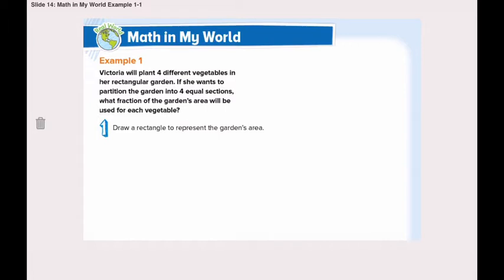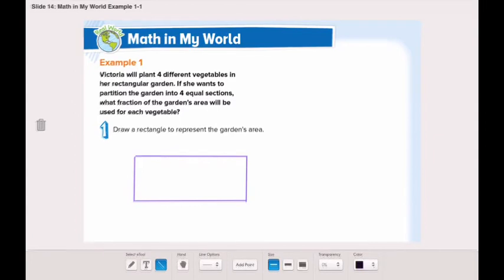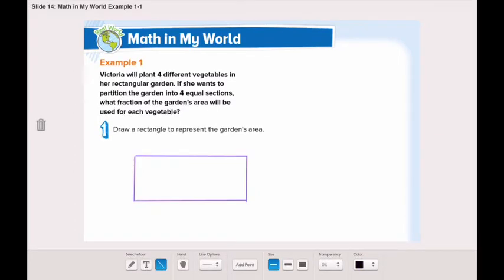Our first step is to draw a rectangle to represent the garden's area. Here I drew my rectangle. Now let's partition this rectangle into four equal sections. I will start by partitioning the rectangle into two equal sections, exactly in the middle.